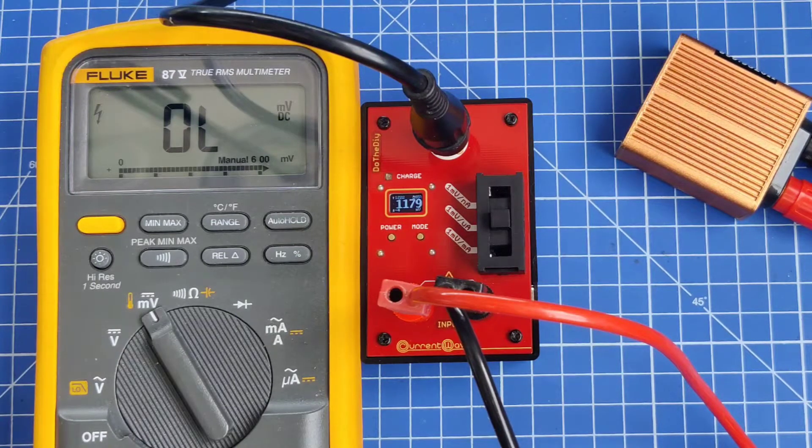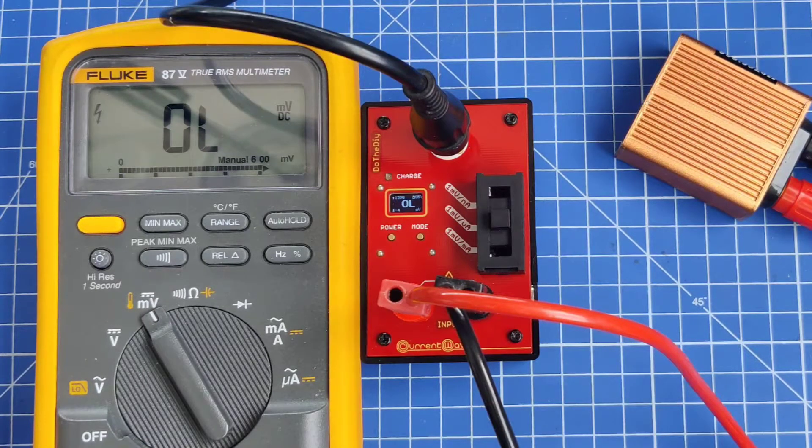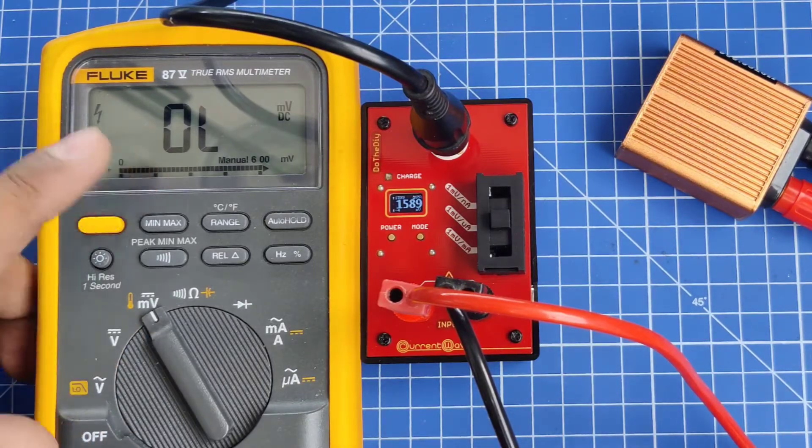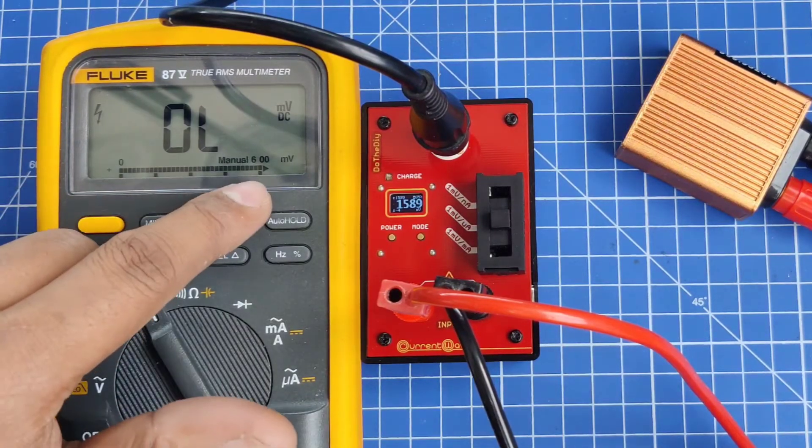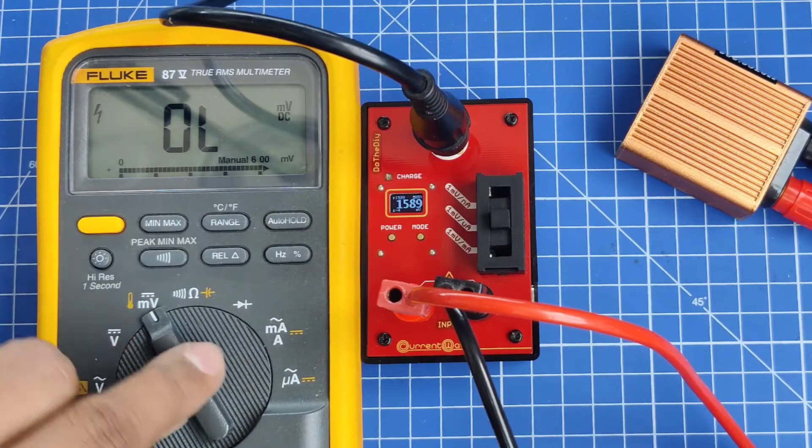Here you can see it has started measuring now. I can keep increasing. You can see 1580, and just above that it will start to show as OL. That is the range of this.